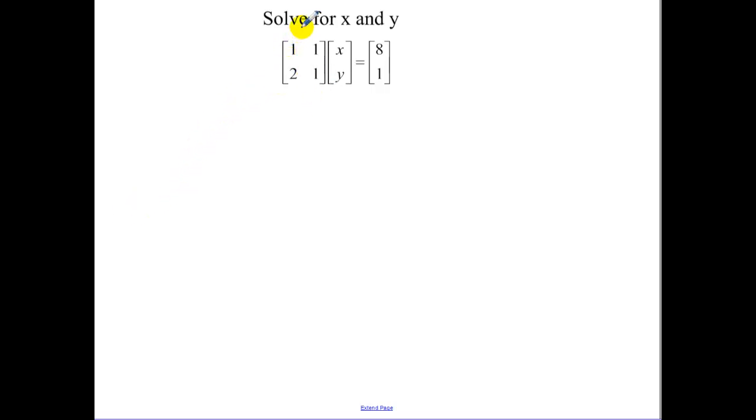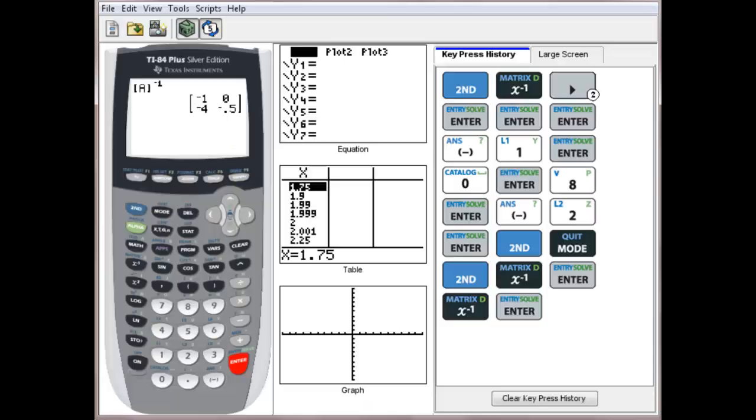This is standing for A times by our variable matrix X equals B. So what we have to find is we have to find A inverse, because if I multiply A inverse on the left, and if I multiply A inverse on the left, I also have to multiply B by A inverse. So in our calculator, we're going to find A inverse times by B. We need to input some stuff into our calculator.